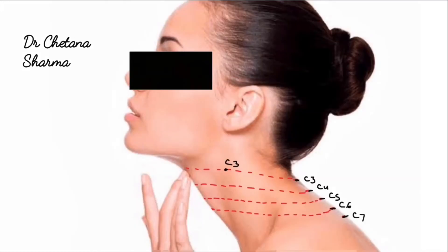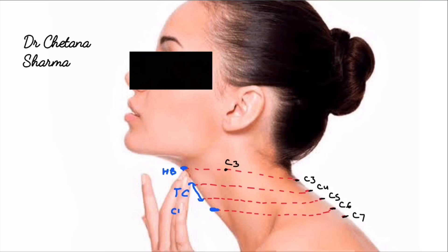One more point: when you palpate the anterior median plane of the neck at the level of C3 vertebra, you will feel a bony prominence that is the hyoid bone. And at the level of C4 and C5, you can mark the thyroid cartilage. And at the level of C6, you can feel the cricoid cartilage.